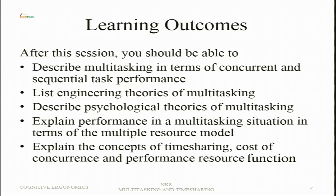We will list engineering theories of multitasking, but we will not go into their details because the focus is more on human performance. We will look at psychological theories which try to explain multitasking in the form of some resources — attentional cognitive resources which may be attentional, perceptual, or action-related. Then we will explain performance in a multitasking situation in terms of the multiple resource model — whether a single resource model or a multiple resource model is more appropriate. We will also explain the concepts of time sharing, cost of concurrence, and performance resource function.